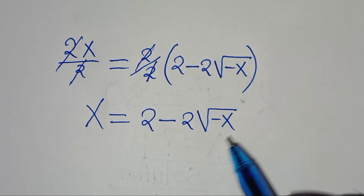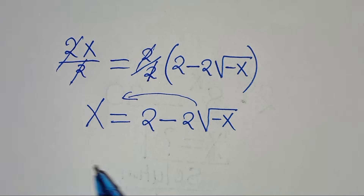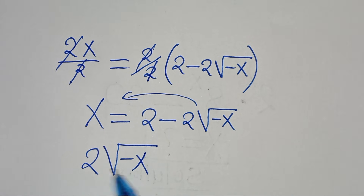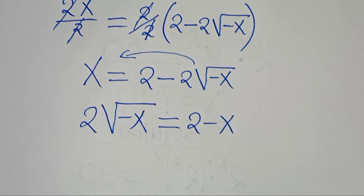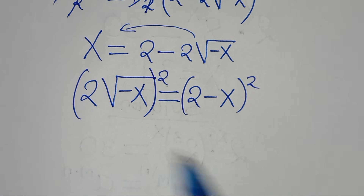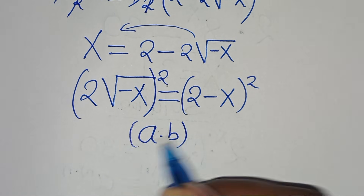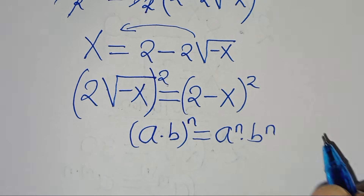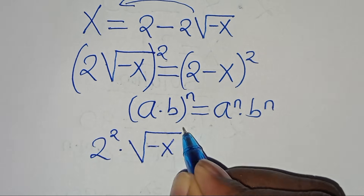The next step is to take minus 2 square root of minus x to the left hand side and x to the right hand side, so that we have 2 square root of minus x is equal to 2 minus x. Now we square on both sides. The expression 2 times square root of minus x to the power of 2 is in the form of (a times b) to the power of n, which equals a to the power of n times b to the power of n. Applying this property, we have 2 squared times the square root of minus x squared.